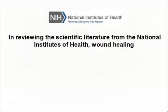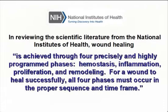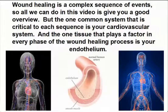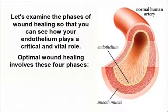In reviewing the scientific literature from the National Institutes of Health, wound healing is achieved through four precisely and highly programmed phases: hemostasis, inflammation, proliferation, and remodeling. For a wound to heal successfully, all four phases must occur in the proper sequence and time frame. Wound healing is a complex sequence of events, but the one common system that is critical to each sequence is your cardiovascular system, and the one tissue that plays a factor in every phase of the wound healing process is your endothelium.